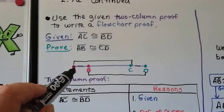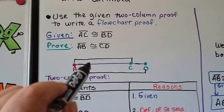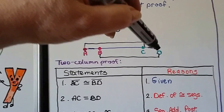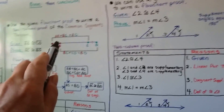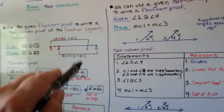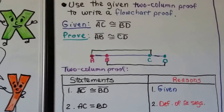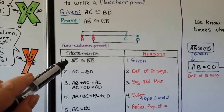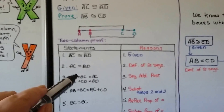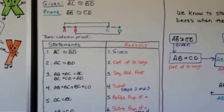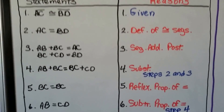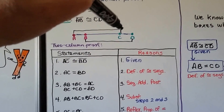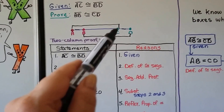In our next example, our given is that segment AC is congruent to segment BD, and we need to prove that segment AB is congruent to CD. So it's the opposite of what we did before. We have our two-column proof with given that segment AC is congruent to segment BD, which means they're equal — definition of congruent segments. Then, AB plus BC equals AC because of the segment addition postulate. We can also say BC plus CD equals BD.